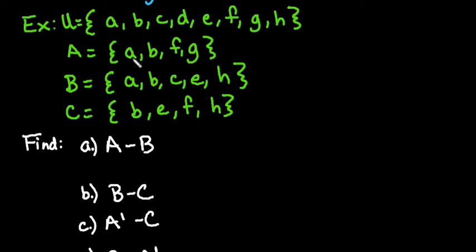Set A contains the letters A, B, F, and G. Set B contains the letters A, B, C, E, and H, and set C contains the letters B, E, F, and H.